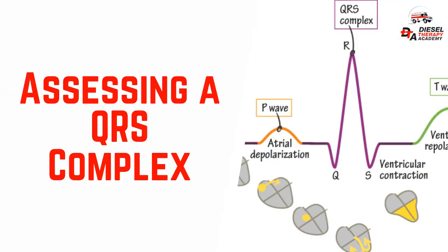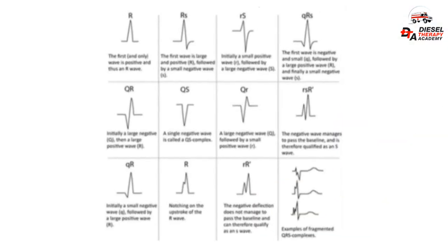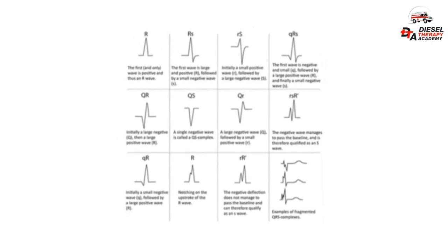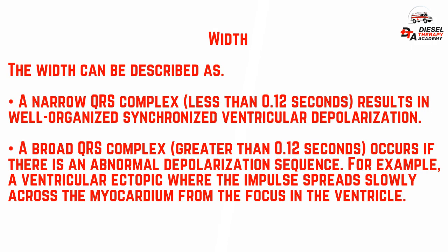Assessing a QRS complex: the standard QRS segment has three graphical deflections. Regarding width: a narrow QRS complex, less than 0.12 seconds, results in well-organized synchronized ventricular depolarization. A broad QRS complex, greater than 0.12 seconds, occurs if there is an abnormal depolarization sequence — for example, a ventricular ectopic where the impulse spreads slowly across the myocardium from a focus in the ventricle.